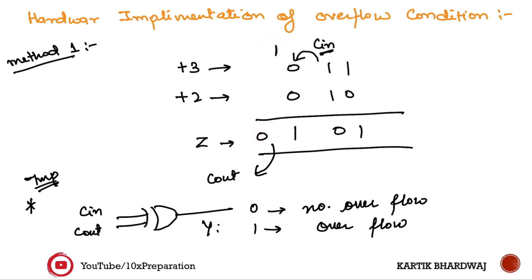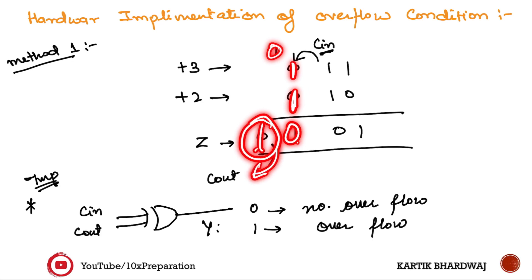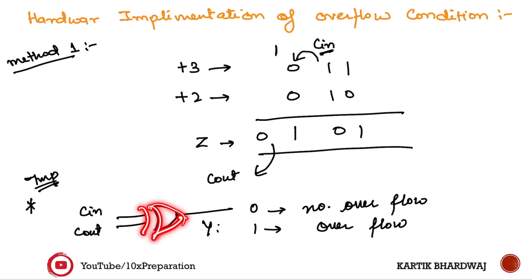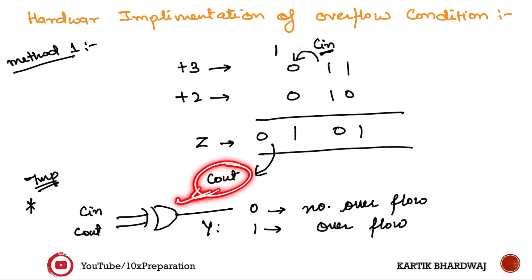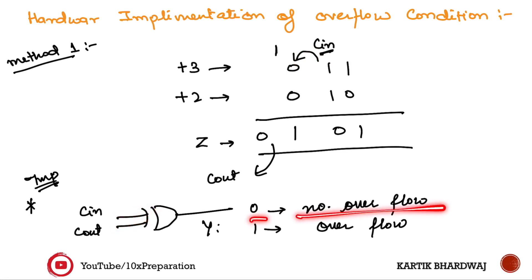If Cin to the MSB is 1 and Cout is 0, or if Cin is 0 and Cout is 1, the XOR gives 1, indicating overflow. Whenever Cin and Cout of the MSB are XORed and the result is 1, overflow is present; if 0, no overflow. So XOR of Cin and Cout of the most significant adder stage provides the overflow output Z: if Z is 0, no overflow; if Z is 1, overflow is there.